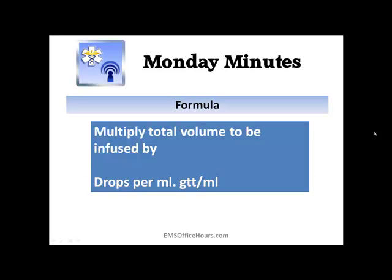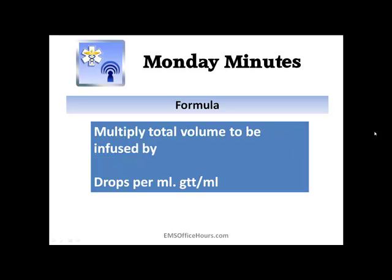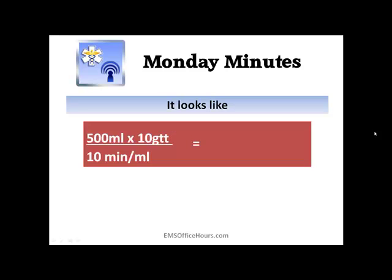Pretty easy — but what's the formula? For any fluid administration, not just normal saline, you multiply the total volume being infused by the drops per mL of the administration set, and then divide that by the infusion time in minutes. Don't let it be any harder than it has to be. So you're multiplying the total volume by the drops per mL and dividing by the time of infusion in minutes — that gives you the infusion times the drop set divided by the minutes.